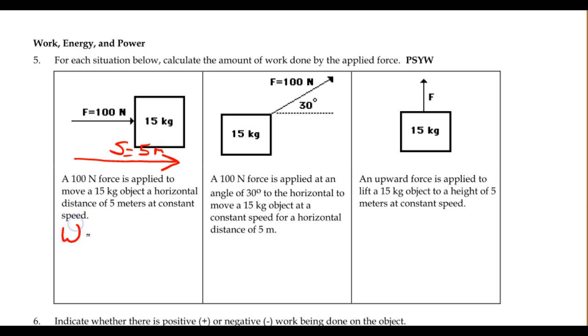Now, to calculate the work done, that's going to be the force that we apply times the distance that it moves times the cosine of the angle between the force and the displacement. Now, in this case, that's 100 newtons times 5 meters times the cosine of 0 degrees.